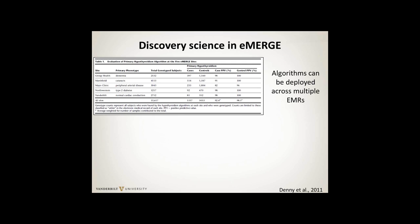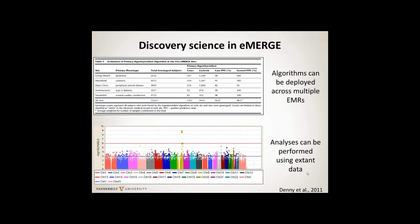I just wanted to make the point, which Rex has made before, that discovery science in eMERGE is involved not just in discovering new genotype-phenotype associations, but discovering how to do research across the electronic medical records - deploying algorithms that work across multiple EMRs. This is a screenshot of a table from the hypothyroidism paper, using existing data for the hypothyroidism GWAS.